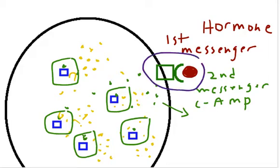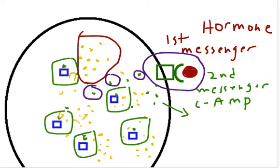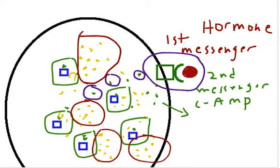the first messenger, making many copies of cyclic AMP, the second messenger. The cyclic AMP activates the enzyme, and now, all of a sudden, we get a huge number of glucose molecules because of the second messenger system.